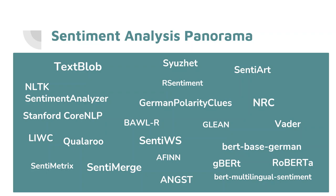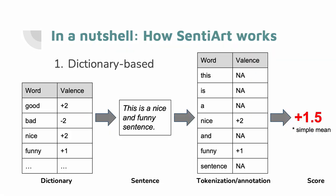SentiArt is an example of a dictionary-based approach. Dictionary-based approaches generally work in the way described by this diagram, where everything starts from a dictionary — a series of words with different values assigned to them. In this case we see the example of valence values. A sentence is taken and tokenized, split into single words or lemmas. To each word or lemma a single value is assigned by mapping them to the dictionary. Finally, a single score is produced by calculating, for example, a simple mean of all the scores in the sentence.